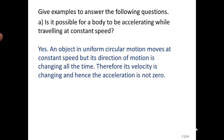An object in uniform circular motion moves at constant speed, but its direction of motion is changing all the time. Therefore, its velocity is changing and hence the acceleration is not zero.